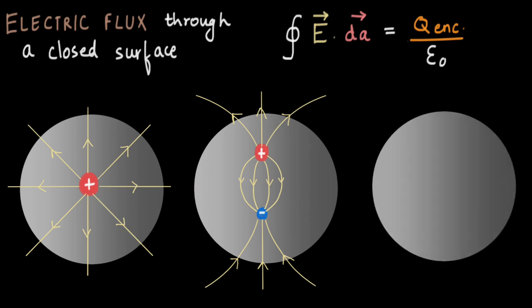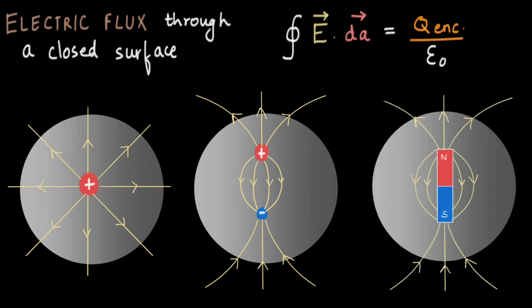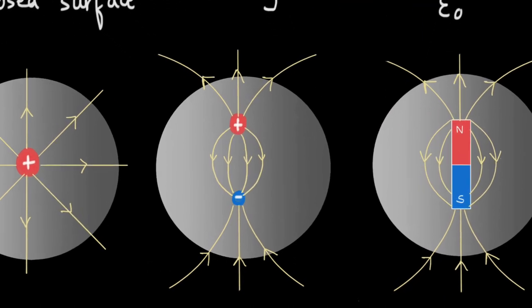Now let's bring back our magnetic dipole into the picture. The magnetic flux in this case would also be zero because there are no monopoles. We are taking a magnetic dipole, and just like the flux for an electric dipole was zero, similarly the flux for a magnetic dipole is zero. The field lines are geometrically similar — the number of field lines leaving the surface equals the number entering from the other side. It doesn't matter how you place the bar magnet inside the surface; you will always get the magnetic flux to be zero.